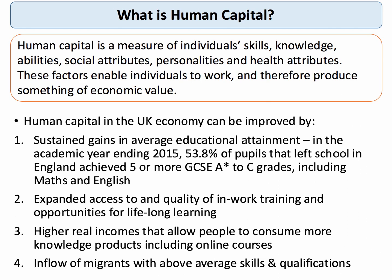A big part of supply-side policy is trying to improve human capital — a measure of the skills, knowledge, attributes, abilities, personalities, and experience of individuals. If you can increase human capital in the UK, you can become more productive and therefore more competitive as a society. Part of this involves getting more students leaving school with at least five A–C grades including English and maths, investing in in-work training and better apprenticeships, more lifelong learning, increasing access to digital resources and the open knowledge economy, and having a migration policy more generous in allowing migrants with above-average skills and qualifications into the economy.